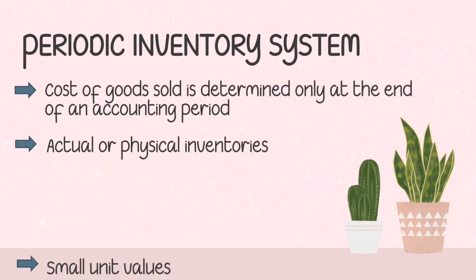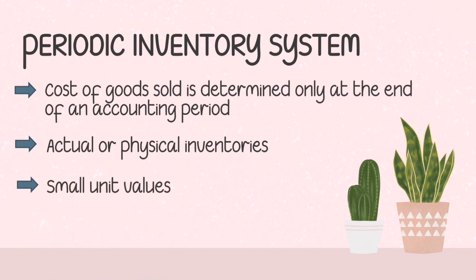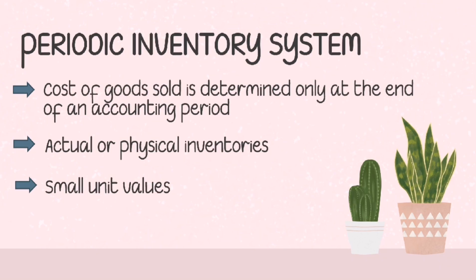The periodic inventory system is used by companies with small unit values — inventories that are small in value with small peso investments, such as groceries and hardware. For example, in groceries, at the end of the reporting period, they do actual physical counting of the inventories.